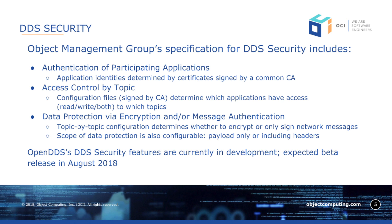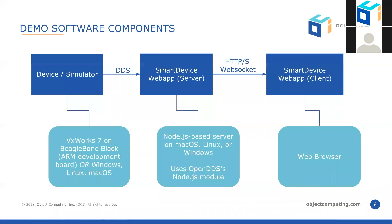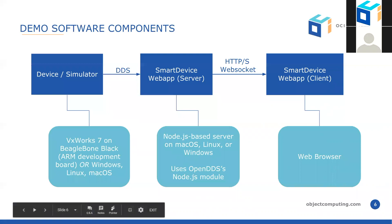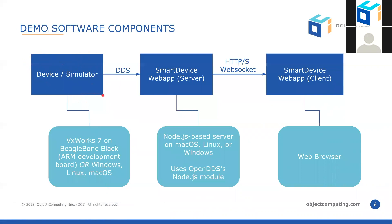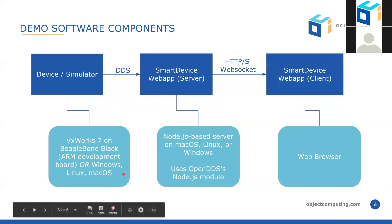Open DDS's security features are currently in development, with a beta release expected in August 2018. This demo is based on three software components. A device or simulator on the left will be sending valve pressure readings out on the network using DDS to communicate with the smart device web app. We've set up the device and simulator to run on VxWorks 7 on the BeagleBone Black, which is an ARM development board, but it can also run on any common desktop OS — Windows, Linux, or Mac OS.